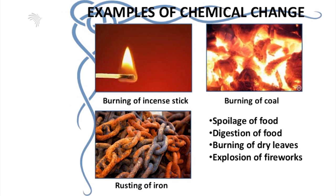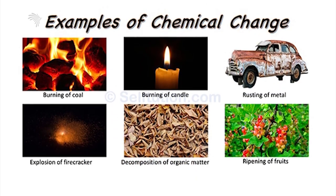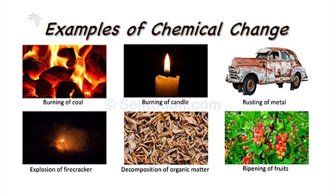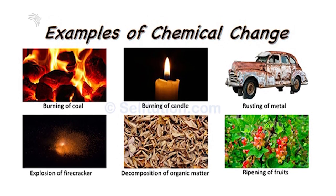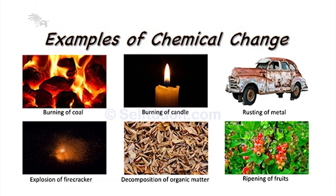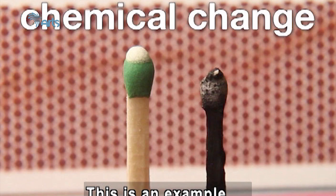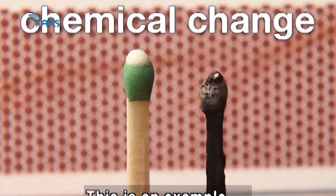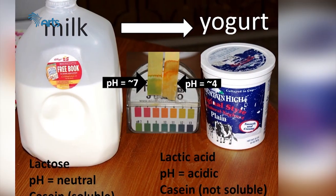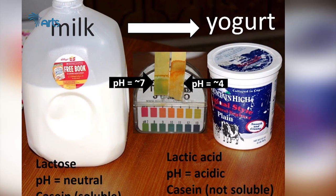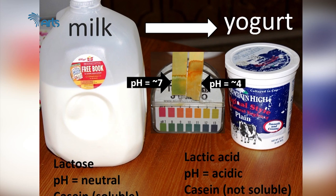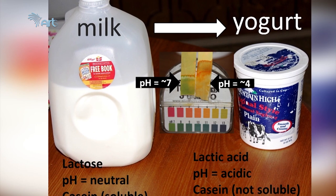Other examples of chemical changes include fermentation — a process widely applied in biology, particularly in connection with the action of yeasts. Once fermentation takes place, the result is something new. Another example of chemical change is the change of milk into yogurt. All these aforementioned examples clearly show what chemical changes look like.